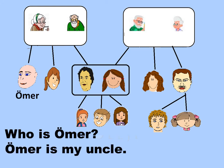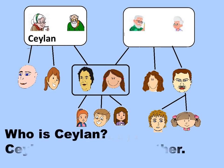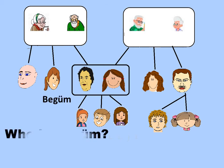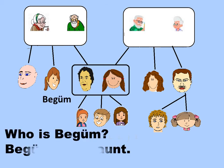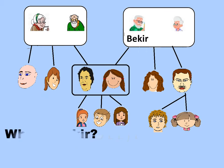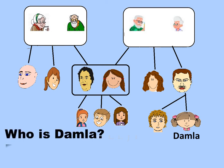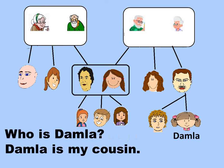Who is Ömer? Ömer is my uncle. Who is Ceylan? Ceylan is my grandmother. Begüm is my aunt. Who is Bekir? Bekir is my grandfather. Who is Damla? Damla is my cousin.